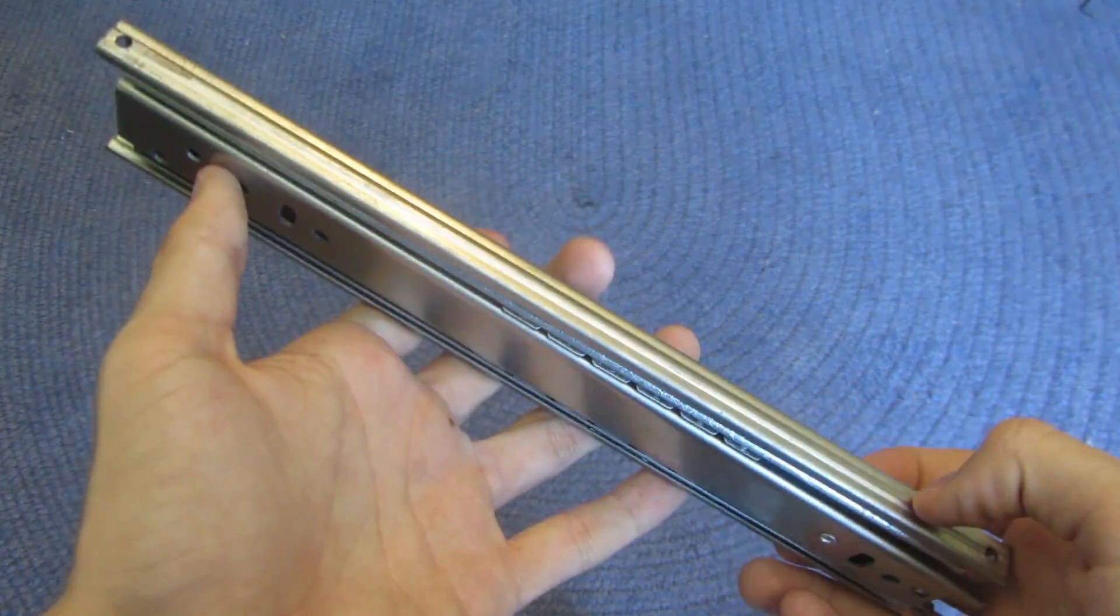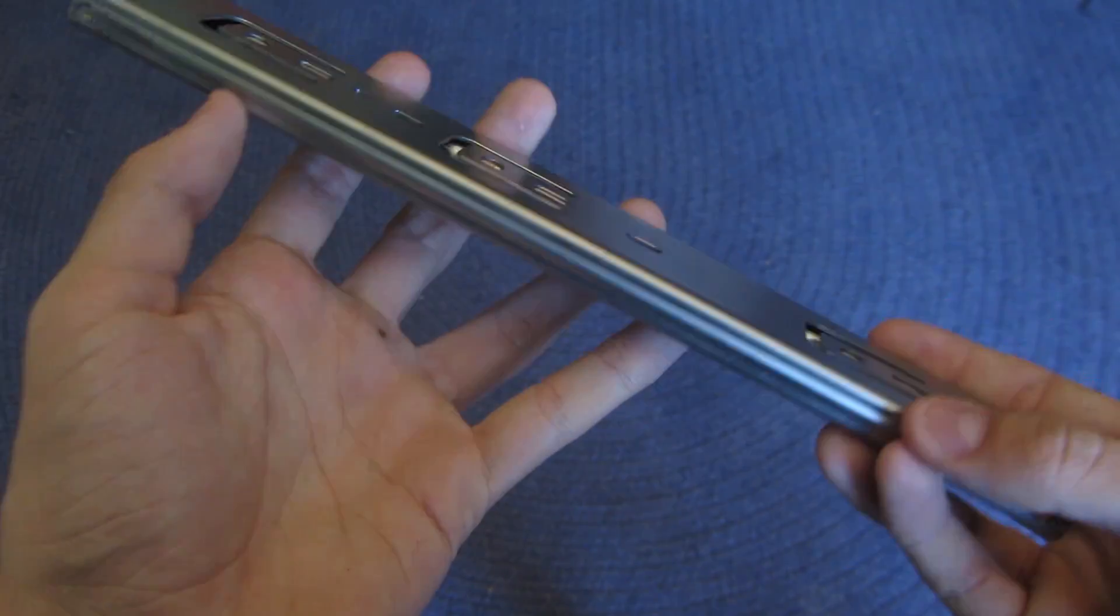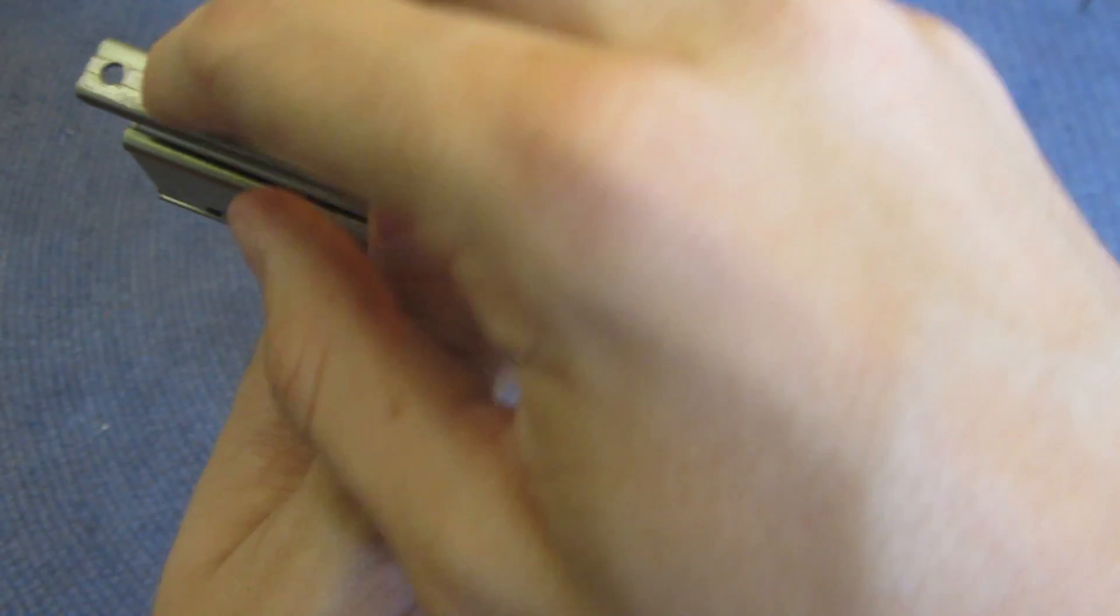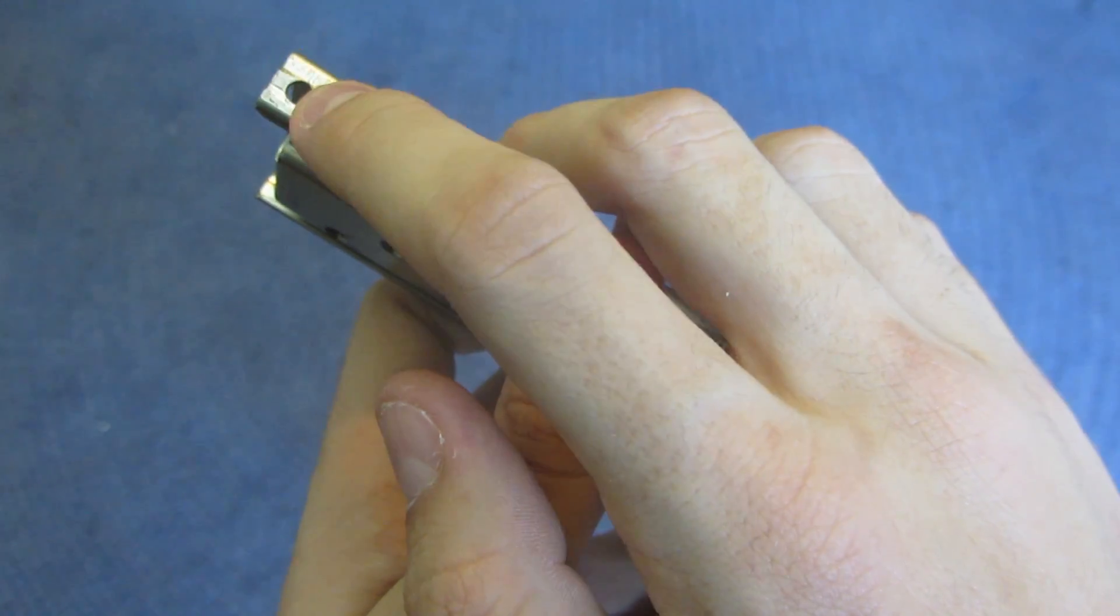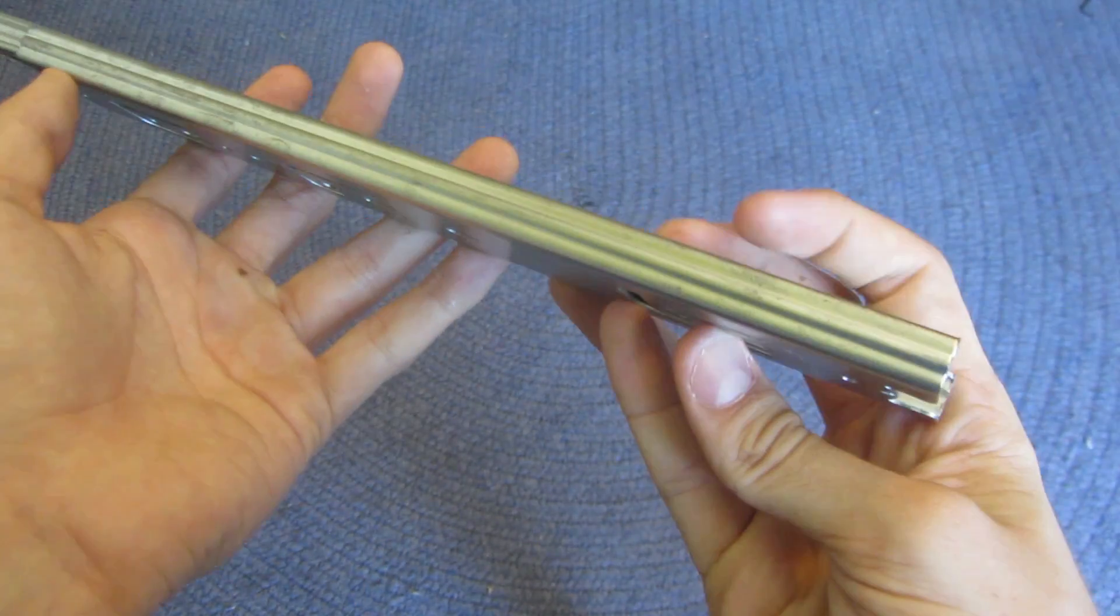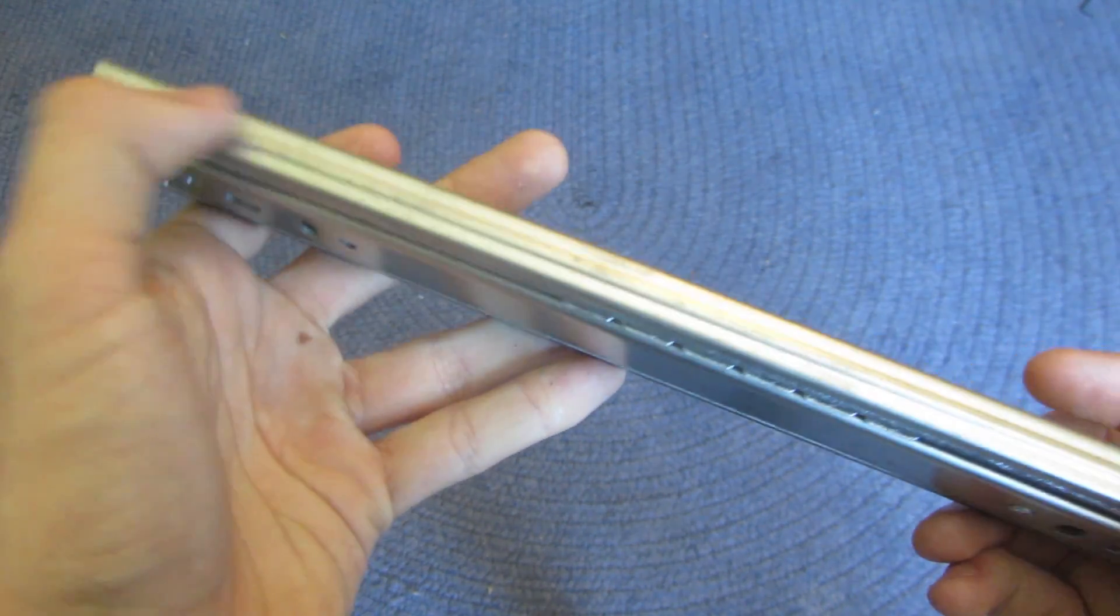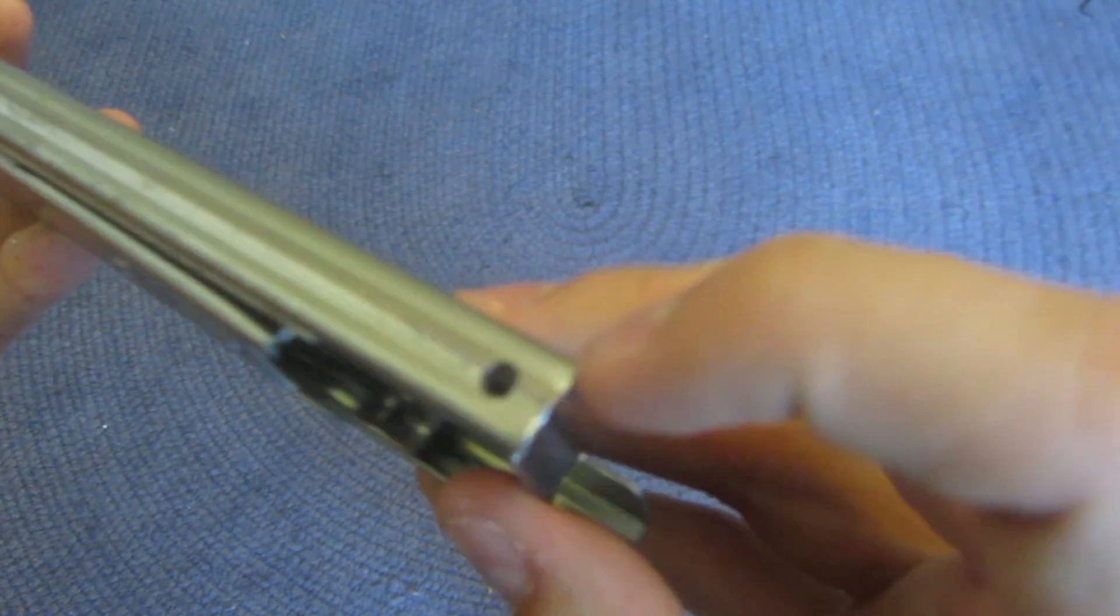Probably before you put your slides together and after you've drilled holes that line up you want to drill holes in one or two sides of your drawer slides. See these ones only have it on one side.